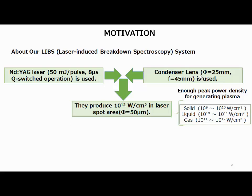Here I used the neodymium YAG laser. The power is 15 mJ per pulse, the pulse duration is 8 microseconds, and Q-switched pulsed operation is used. The condenser lens is used for focusing the laser power, and these two concentration methods produce 10^12 watts per square centimeter power density in the laser spot area. It is possible to generate plasma in all physical states: solid, liquid, and gas.